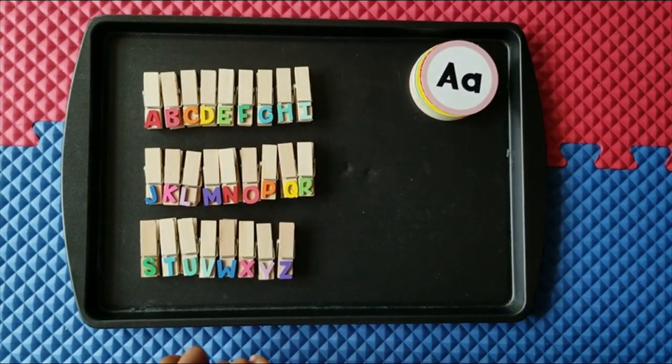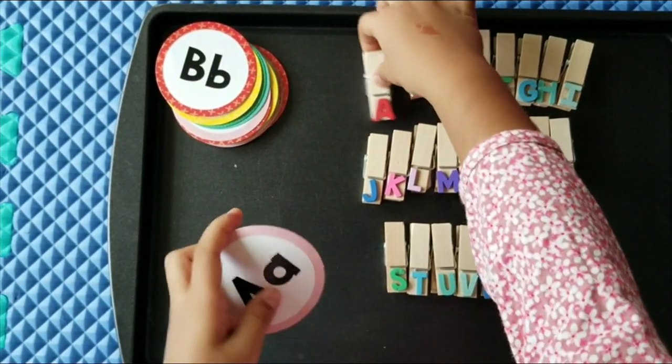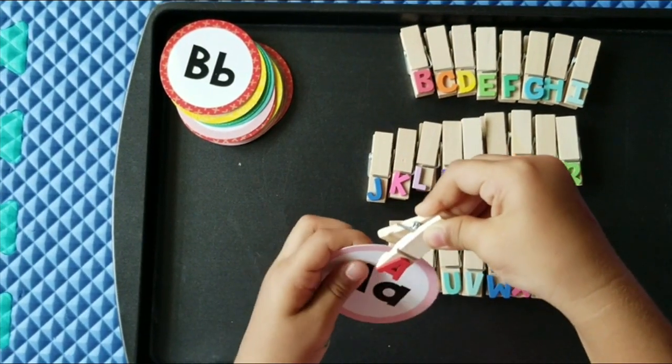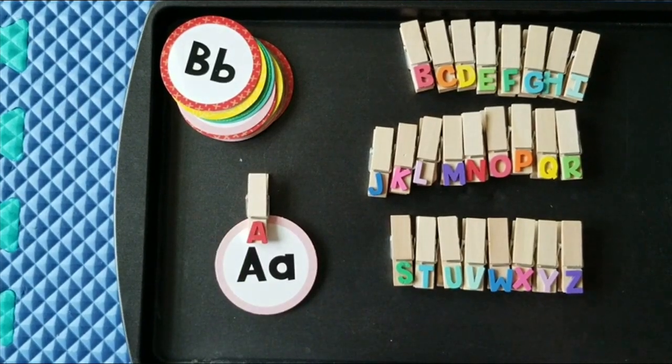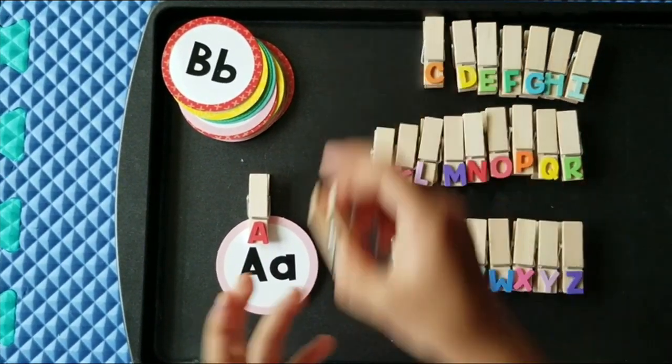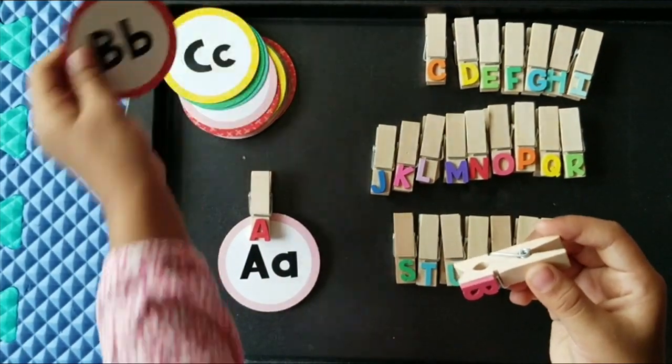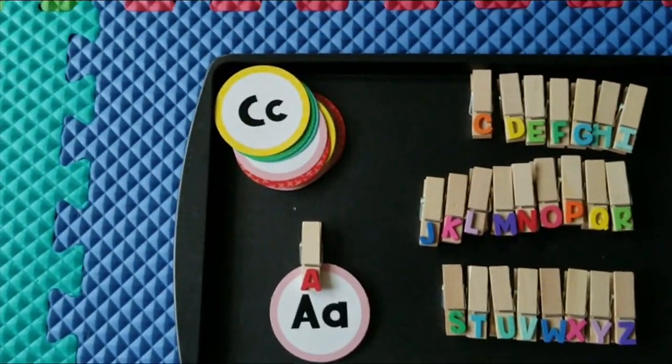Let's start. Letter A and it sounds like apple. The next letter is B. It sounds B.